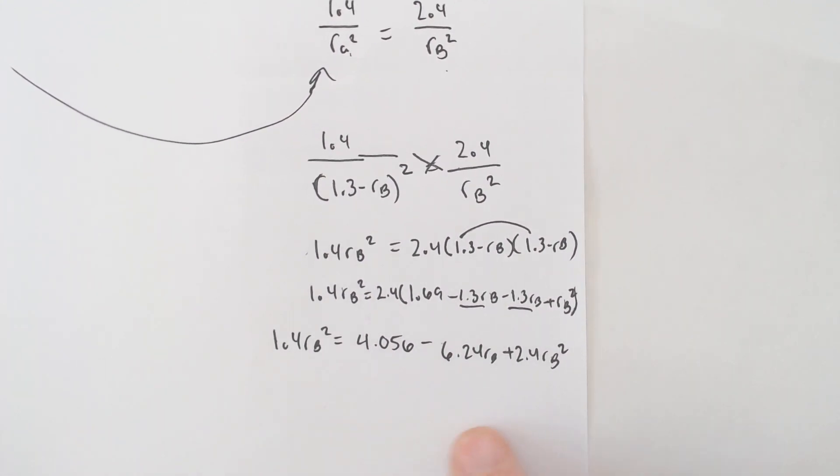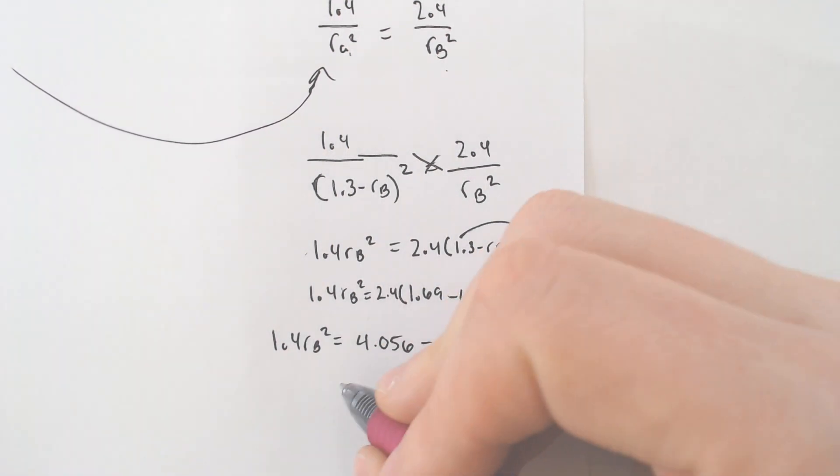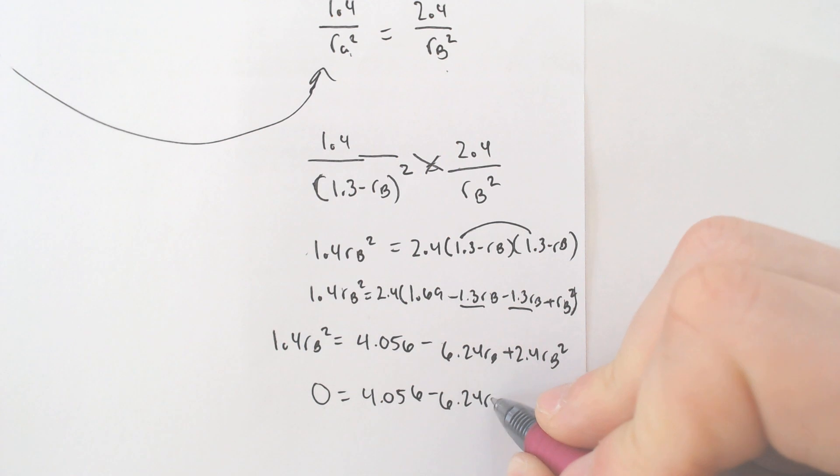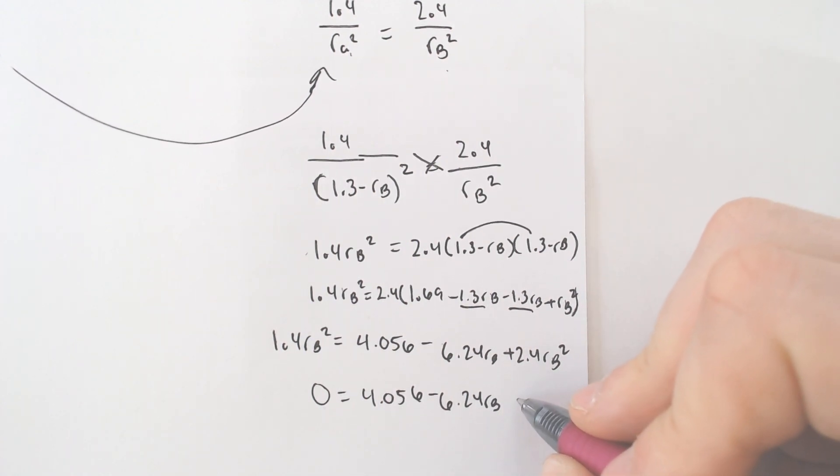Combine any like terms. I'm going to subtract that 1.4 over because this is a quadratic formula problem. You end up with 0, 4.056 minus 6.24 radius of B plus 1 radius of B squared.